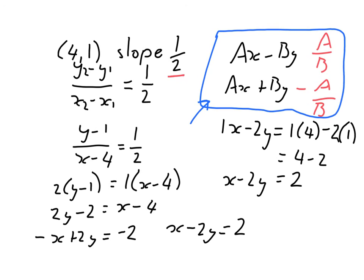This here is a much quicker way to find it because we know ax minus by, slope is a over b, ax plus by slope is minus a over b.